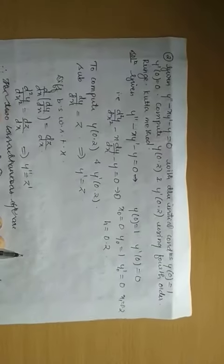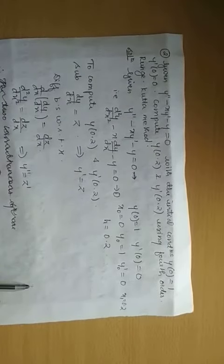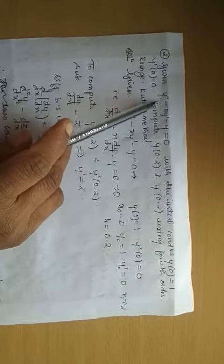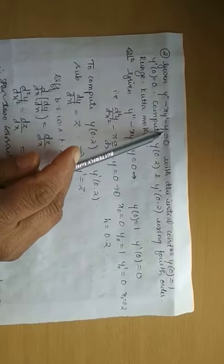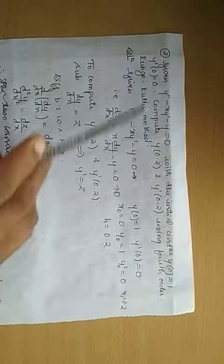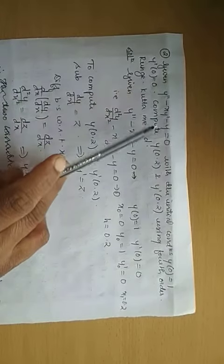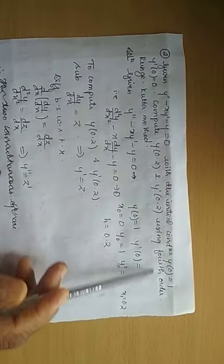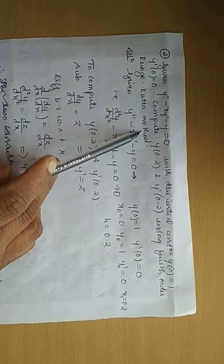We will go with the second problem in second order differential equation solution by RK method. Given y double dash is minus x y dash minus y equals 0 with the initial conditions y of 0 equals 1, y dash of 0 equals 0. Compute y of 0.2 and y dash of 0.2 using fourth order Runge Kutta method.